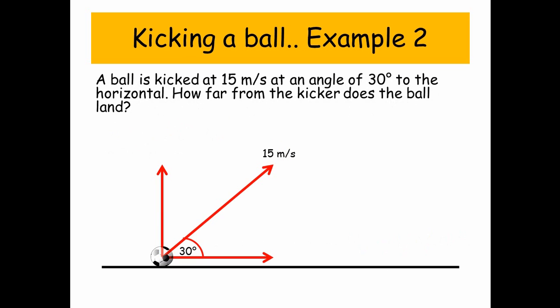So kicking a ball, example 2. A ball is kicked at 15 meters per second at an angle of 30 degrees to the horizontal. How far from the kicker does the ball land? So firstly, let's find the vertical and horizontal components of our velocity. So we've got, in the vertical, 15 times sine 30, which is 7.5 meters per second. And in the horizontal, we've got 15 times cos 30, which is 13.0 meters per second.